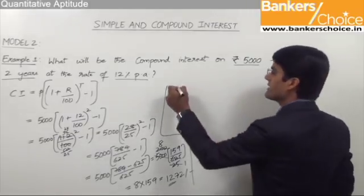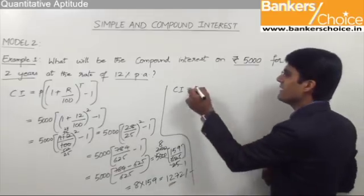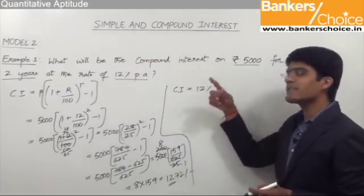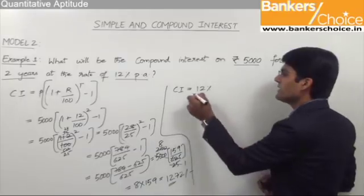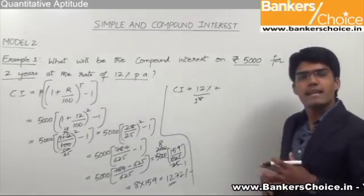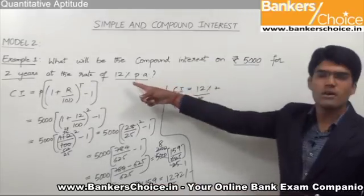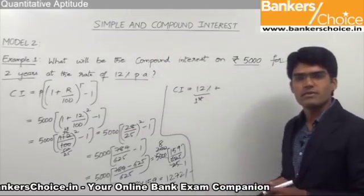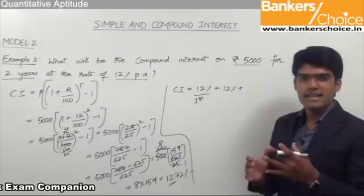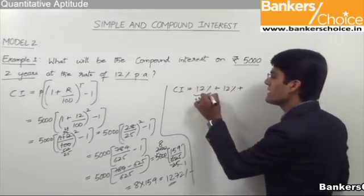The total compound interest in terms of percentage: in the first year we get interest only on the principal amount. Since the rate is 12% and principal is always taken as 100%, first year's interest is 12%. In the second year we get interest on principal (again 12%) plus interest on the first year's interest. That extra amount is 12% of 12%, since the first year's interest was 12%.